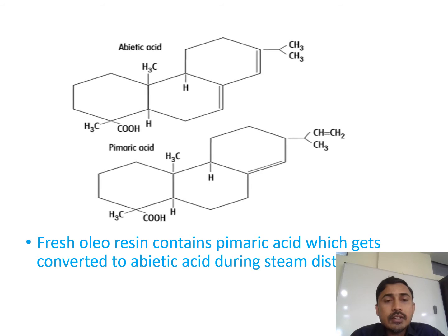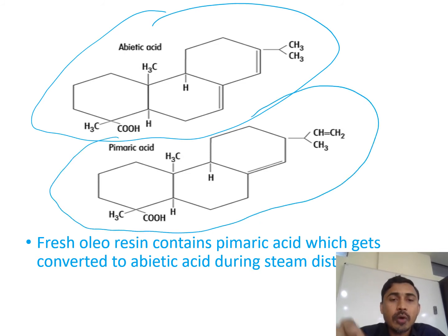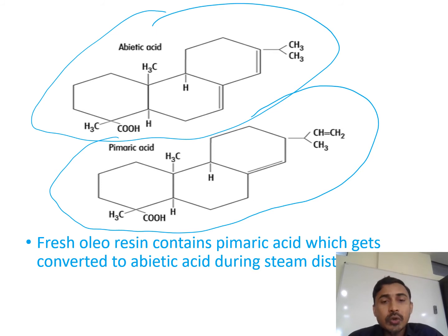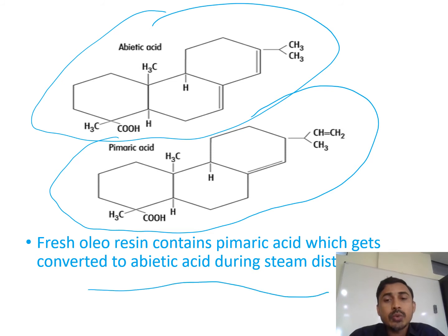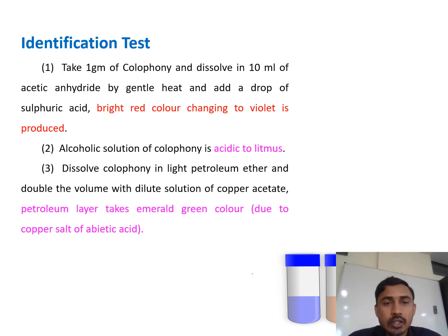Here you can see the chemical structure of abietic acid, and this is the chemical structure of pimaric acid. Generally, a fresh oleoresin contains pimaric acid, which gets converted to abietic acid during steam distillation.